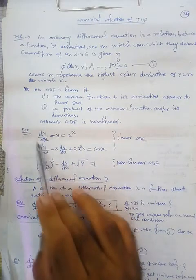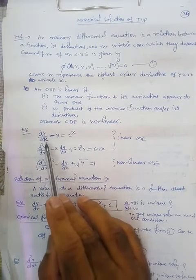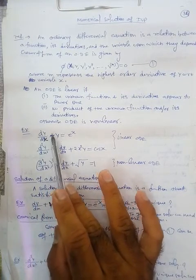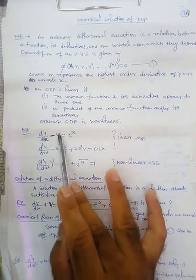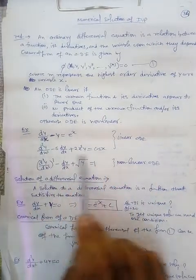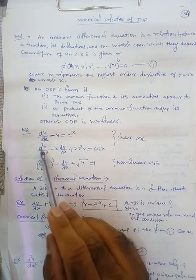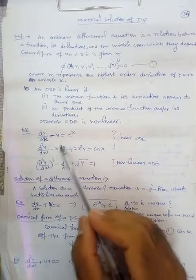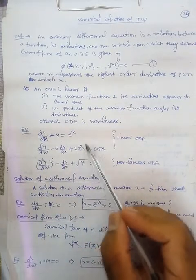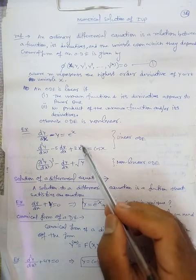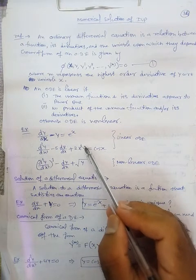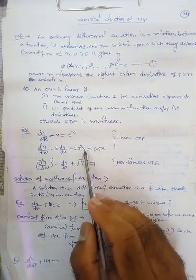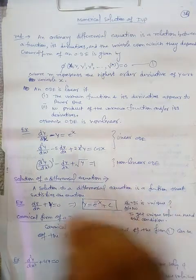For the first example, the highest derivative is 1, there is no product of DY/DX with any other dependent function — so this is linear. The second example has highest order derivative 2; each term has power 1, and X² is an independent variable, so there is no product between the derivative of the dependent variable and Y — hence this is also a linear differential equation.